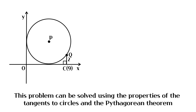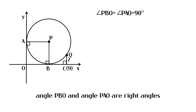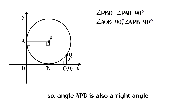This problem can be solved using the properties of tangents to circles and the Pythagorean theorem. Since the tangent to a circle is perpendicular to the radius, angle PBO and angle PAO are right angles. And angle AOB is a right angle, so angle APB is also a right angle.